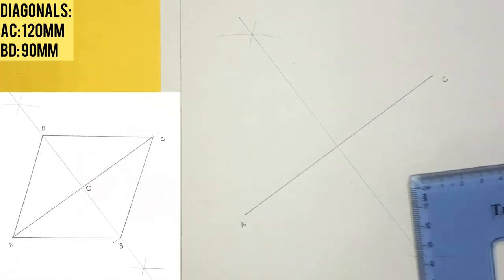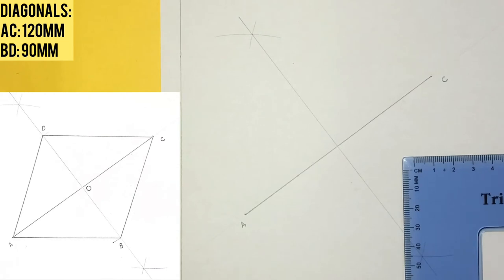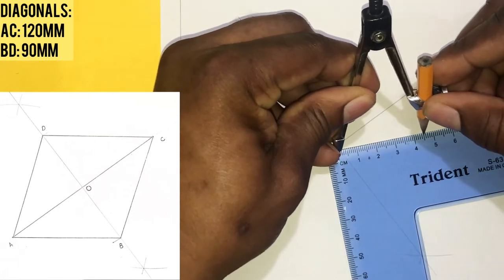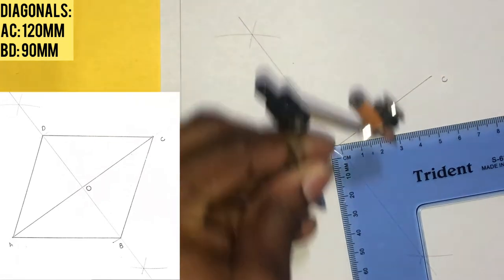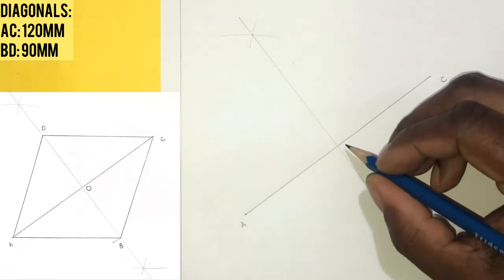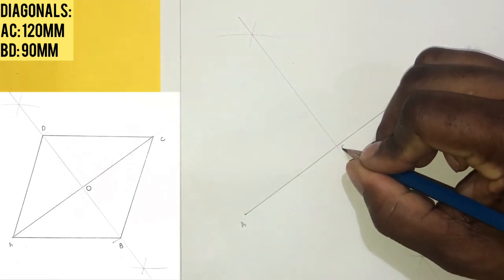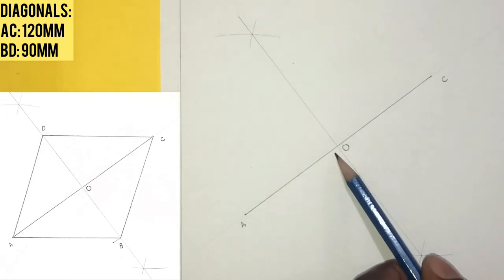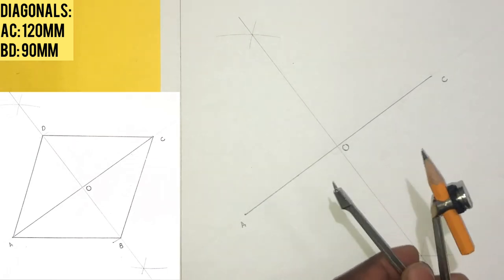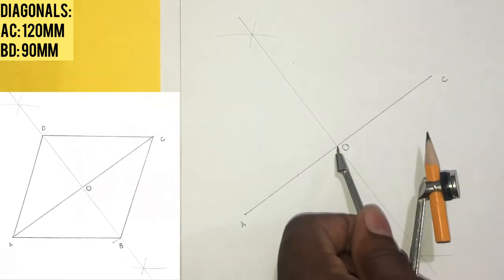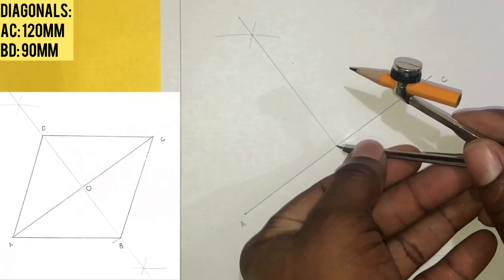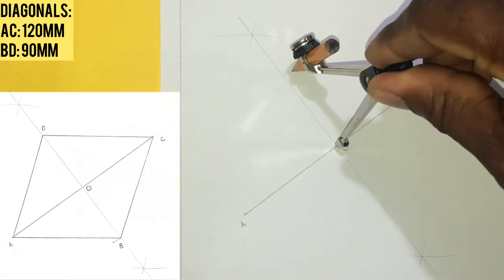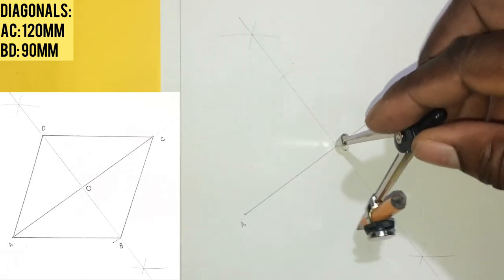Hence, I will open my compass to 45 millimeters which is half of the 90 and I will place my compass at O. O is the point where this line intersected our diagonal right here. So with your compass at 45 millimeters, I will place my compass at O.